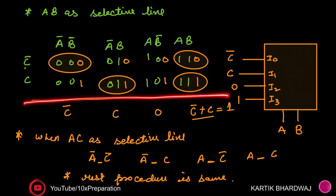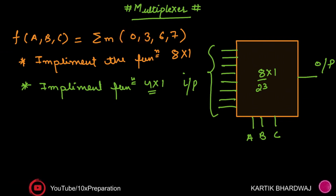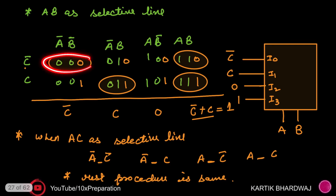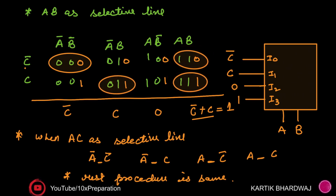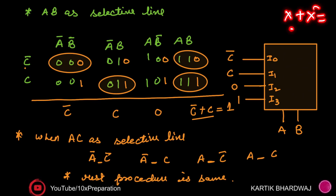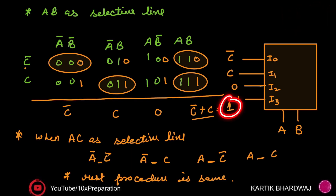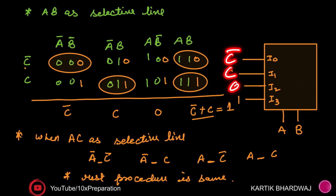Now identify which minterms from Σ(0,3,6,7) fall in each row. Minterm 0 falls under Ā·B̄ with C̄, so input I0 gets C̄. Minterm 3 falls under Ā·B with C, so I1 gets C. No minterms fall under A·B̄, so I2 gets 0. Minterms 6 and 7 both fall under A·B — selecting both C̄ and C — so C̄ + C = 1, meaning I3 gets logic 1. Connect A and B to the select lines.